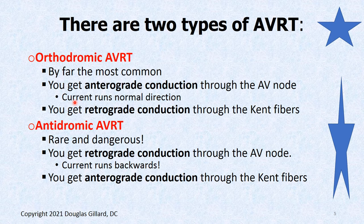There are two flavors of AVRT. By far the most common is orthodromic AVRT, which occurs when the current runs the normal direction — anterograde — through the AV node. That's probably 90 to 95% of the time. Antidromic AVRT is fairly easy to spot and dangerous. It runs retrograde — backwards — through the AV node. If the current runs backwards through the AV node, the slowdown portion doesn't work, so you could get ventricular rates of around 300 beats per minute, which could kill somebody very fast.